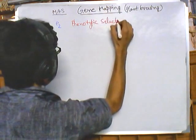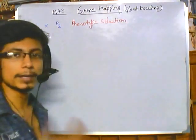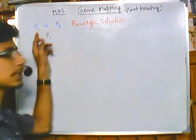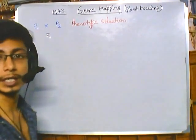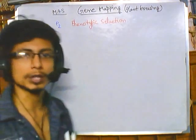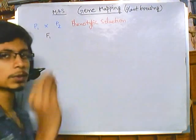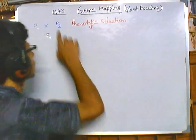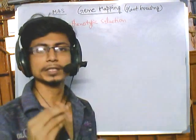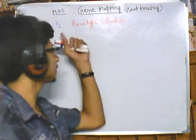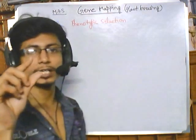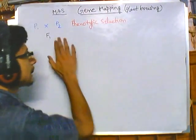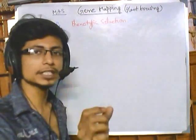In phenotypic selection, we take out plants with our desired traits. For example, one plant may be salt condition tolerant and another may be drought tolerant. We look at their functionality and select them. Say plant two has higher quality — for example, if these are rice plants, P2 has longer rice grains — so we select these two and cross them to make F1.